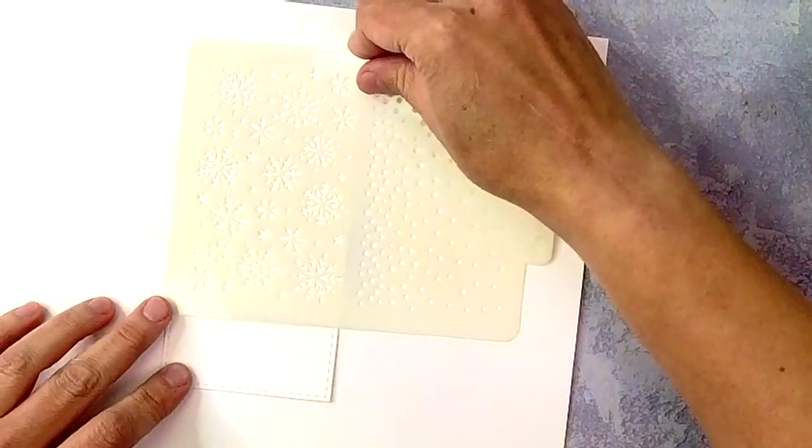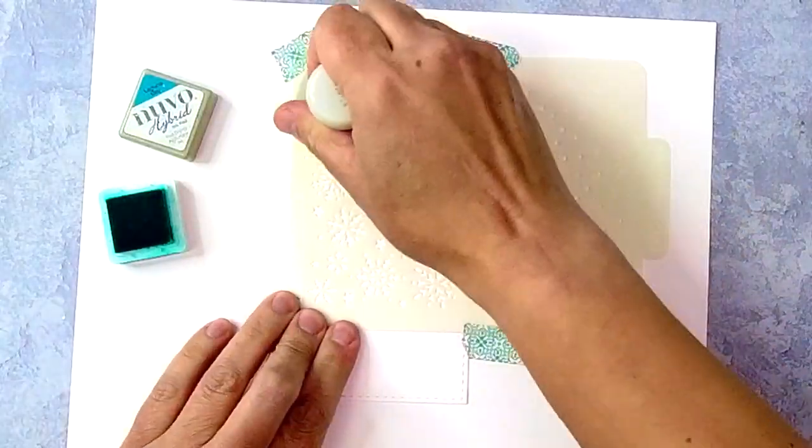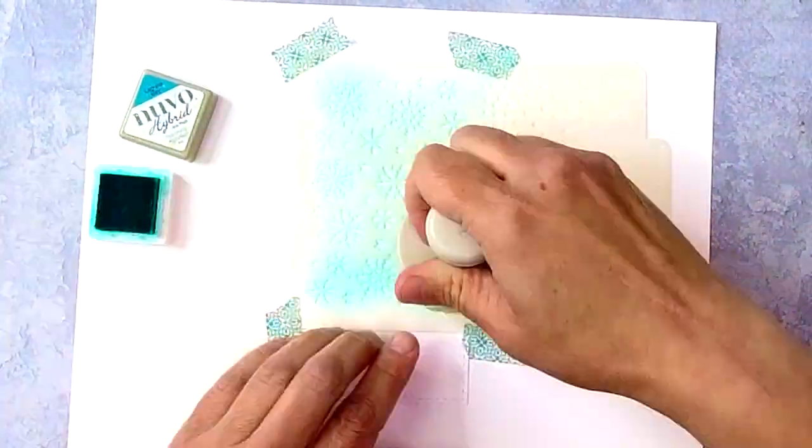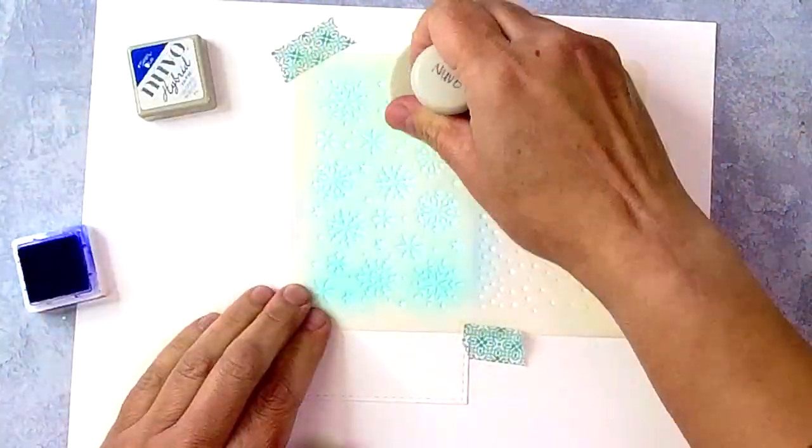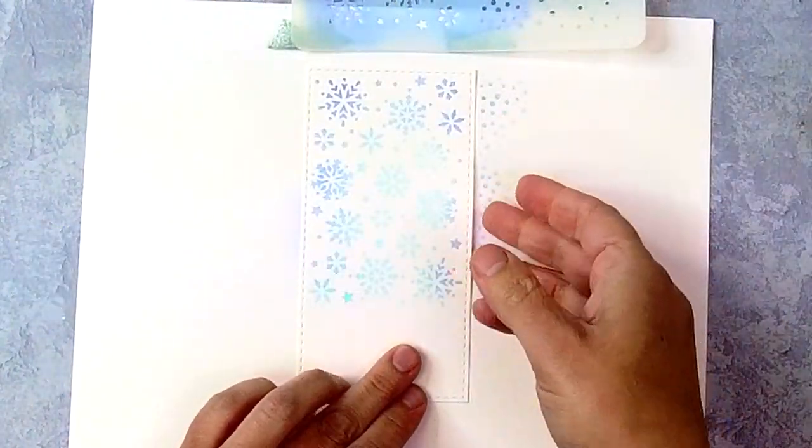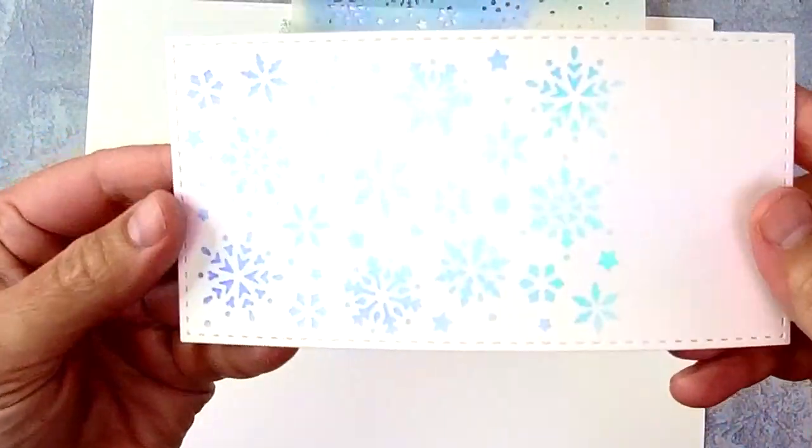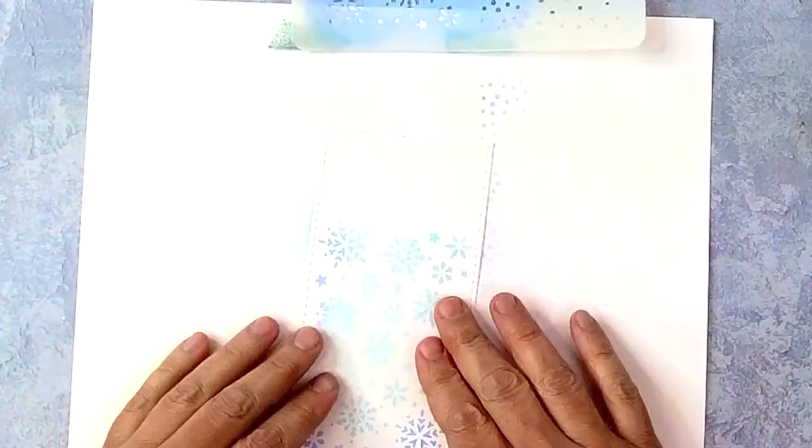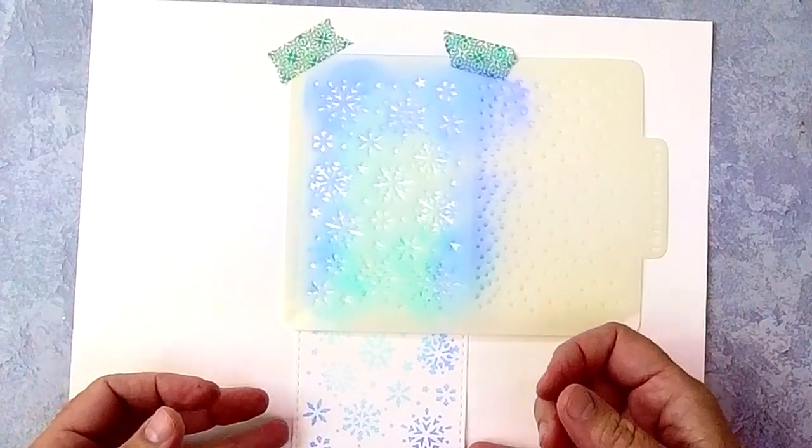Now let's grab that stencil, and I want to show you how easy it is because even if you want to stencil over a larger area, all you need to do is stencil the area that you want. I did a lighter color blue and then a darker color blue around the perimeter, and then you're just going to rotate that stencil, rotate that paper, I mean, and stick it back underneath the stencil.